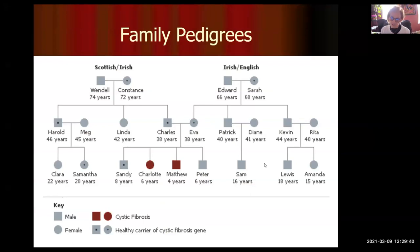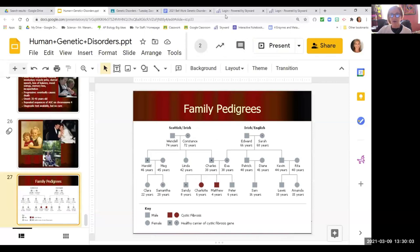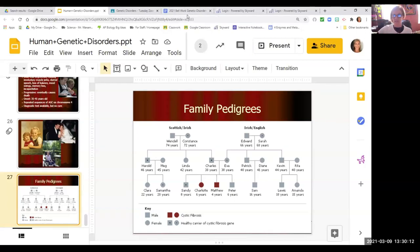We can determine the inheritance pattern — dominant, recessive, sex-linked, or autosomal — by doing pedigrees, which helps us trace the disorders. That was a lot of content — take some time to digest it and try to create a category list of your different disorders. You don't have to know all the details, just how each one is passed on and maybe one key characteristic.